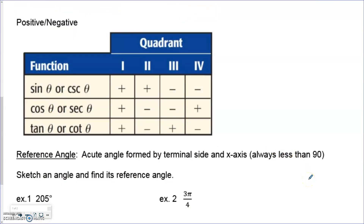Any ratio relating to x's and y's will be positive or negative in each quadrant specifically based on where x and y are positive or negative. Since y values are positive in quadrants 1 and 2, sine and cosecant follow suit. Cosine is related to x, so cosine and secant are positive in quadrants 1 and 4. Tangent and cotangent relate to both x and y, so they're positive when the x and y signs are the same — that's in quadrants 1 and 3.